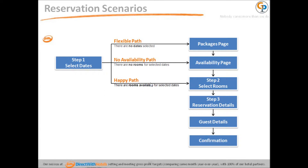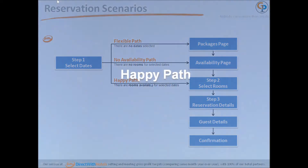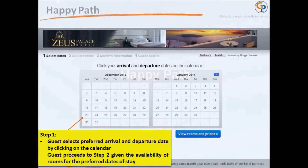The three scenarios are: Flexible, No Availability, and Happy Path. The ideal scenario is called the Happy Path. The guest goes through Step 1 to select the date of arrival and departure, and then proceeds to Step 2 to select a room.